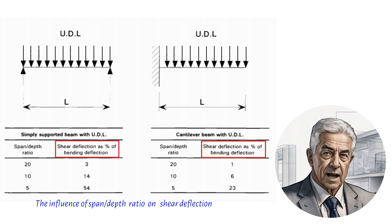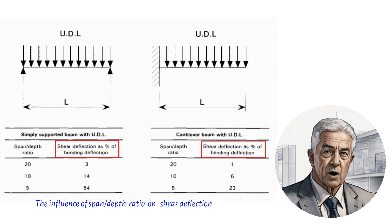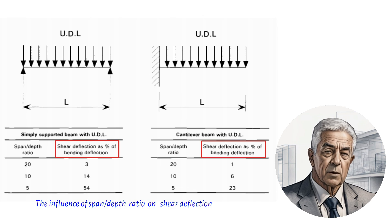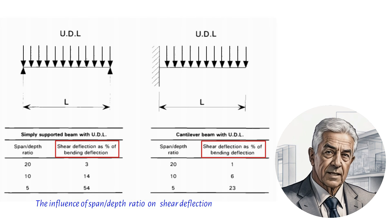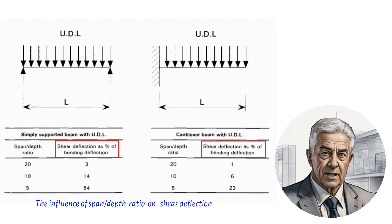Plate girders typically have span-depth ratios between 8 and 15 while span-depth ratios for universal sections in building construction are around 20. At small span-depth ratios, shear deflection may exceed deflection due to bending but both are likely to be small.